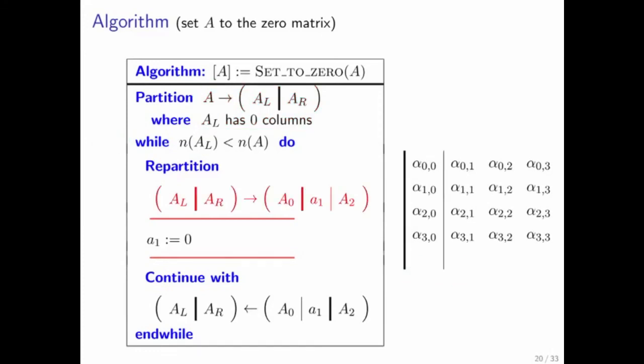And we expose the next column. So this is column A1. And then we set that column equal to zero, where from context it's obvious that this represents the zero vector because it's a vector that is being updated with it, that vector being this column. So it's set to zero, and then we move on.